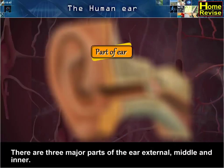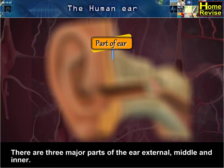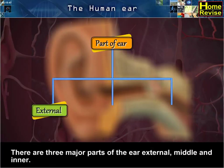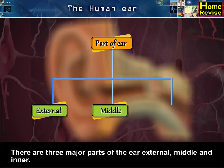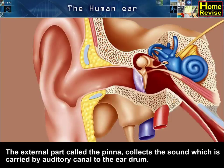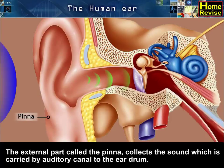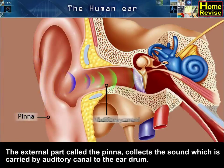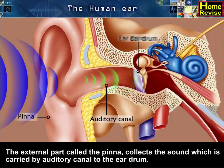There are three major parts of the ear: external, middle, and inner. The external part, called the pinna, collects the sound which is carried by the auditory canal to the eardrum.